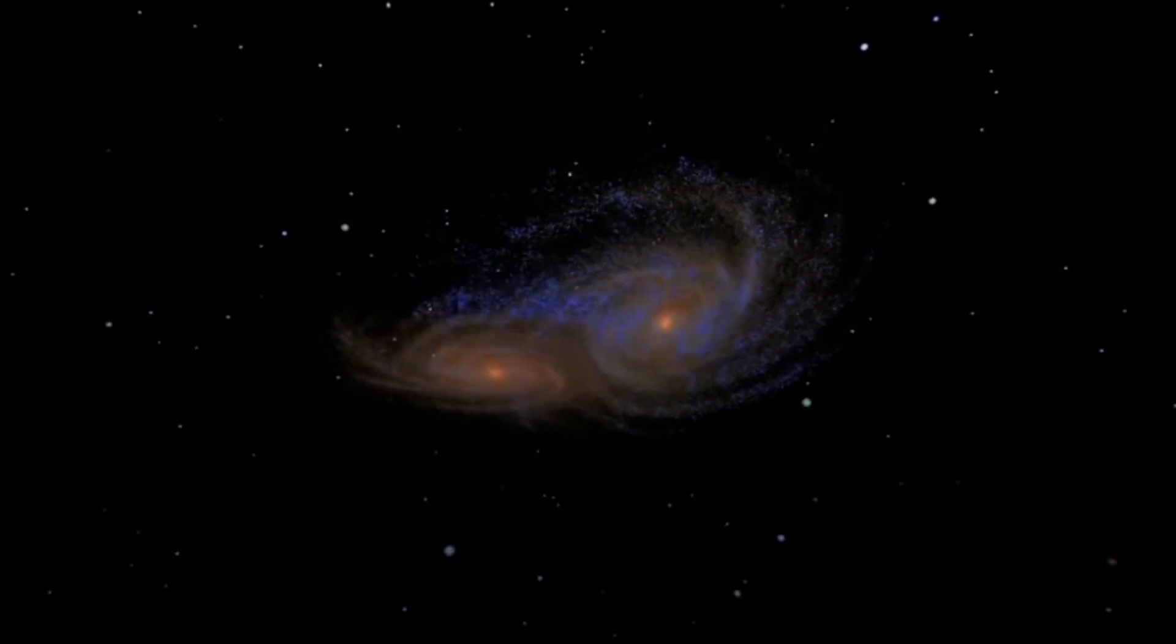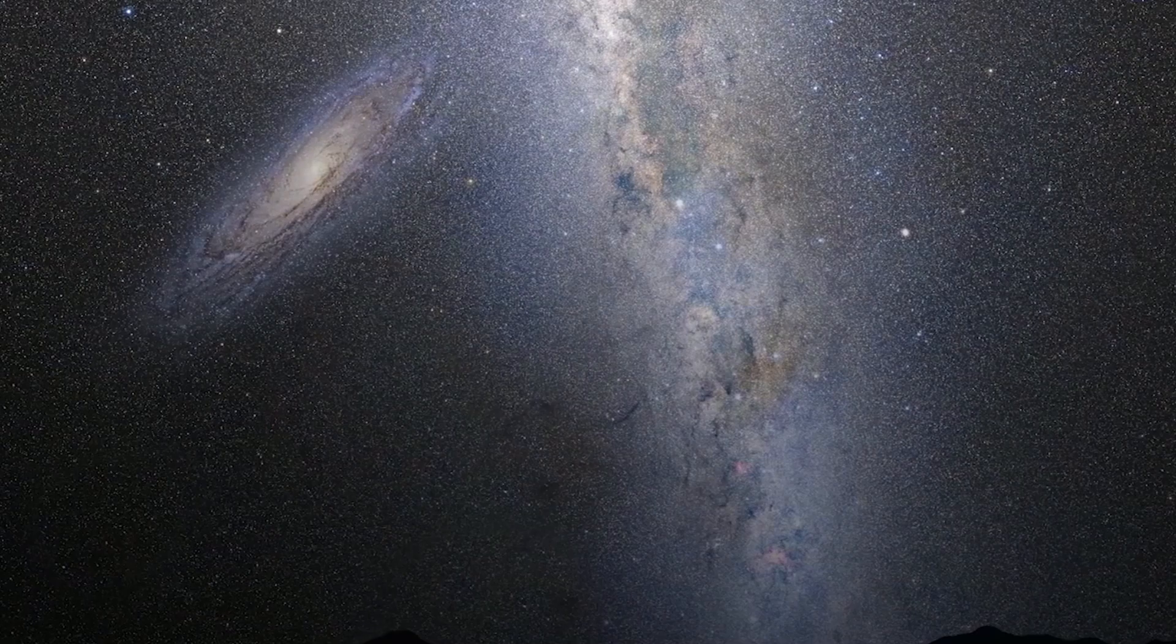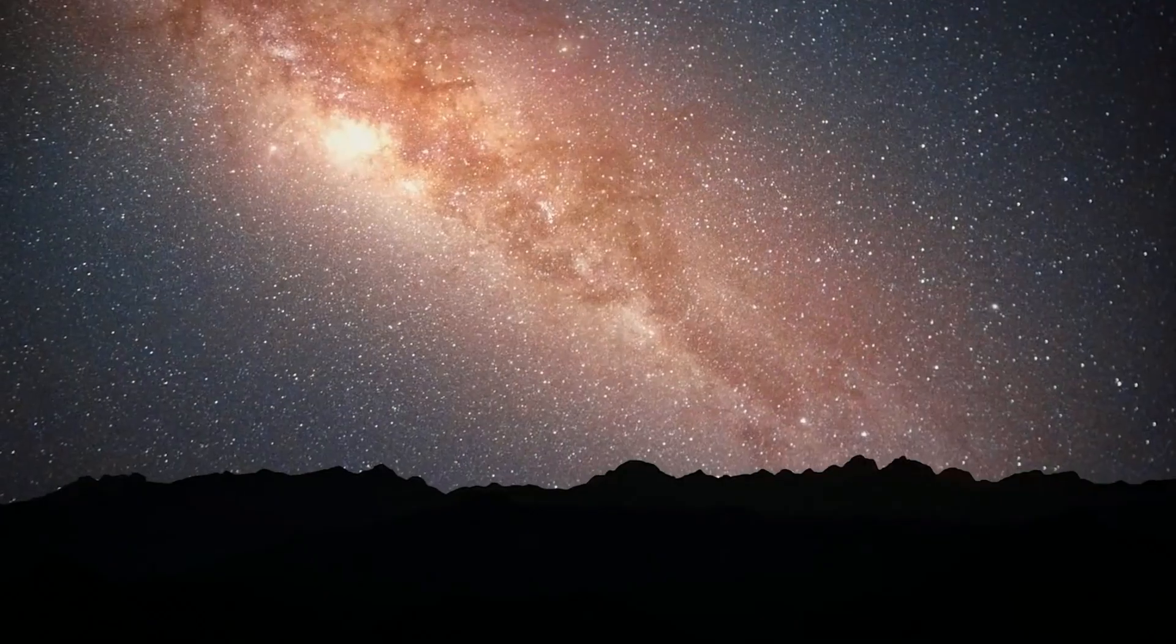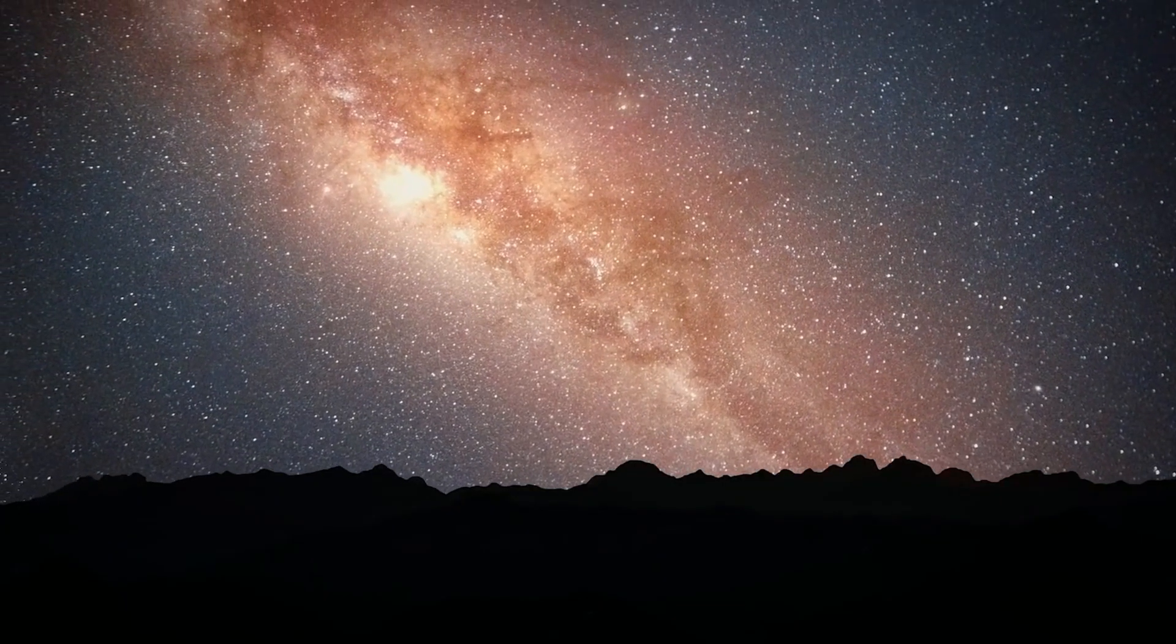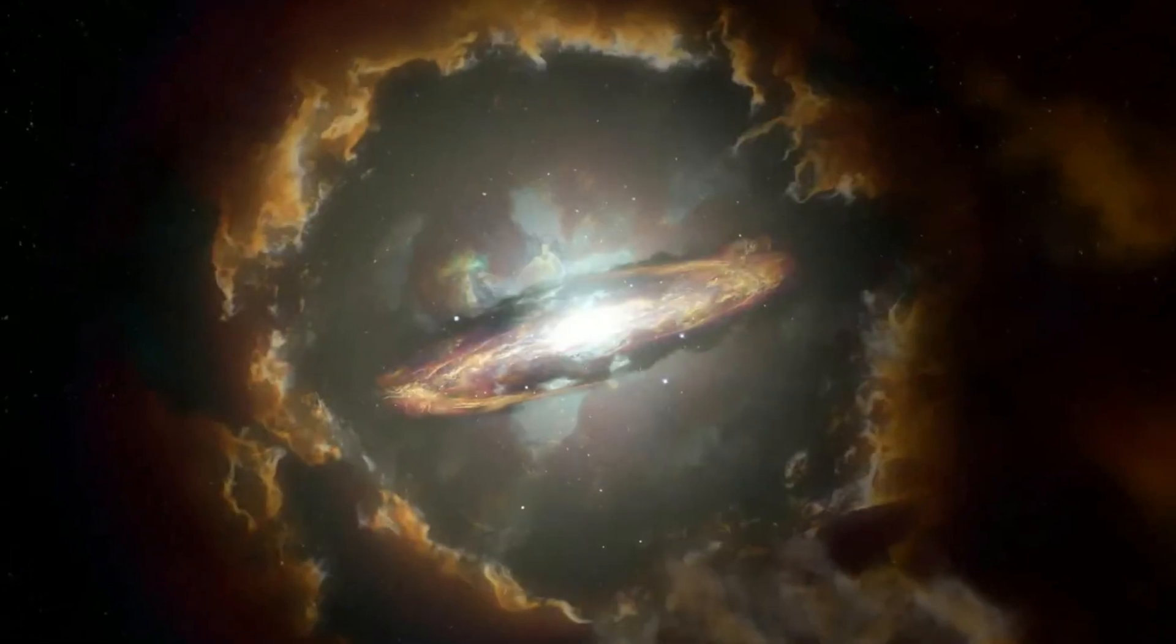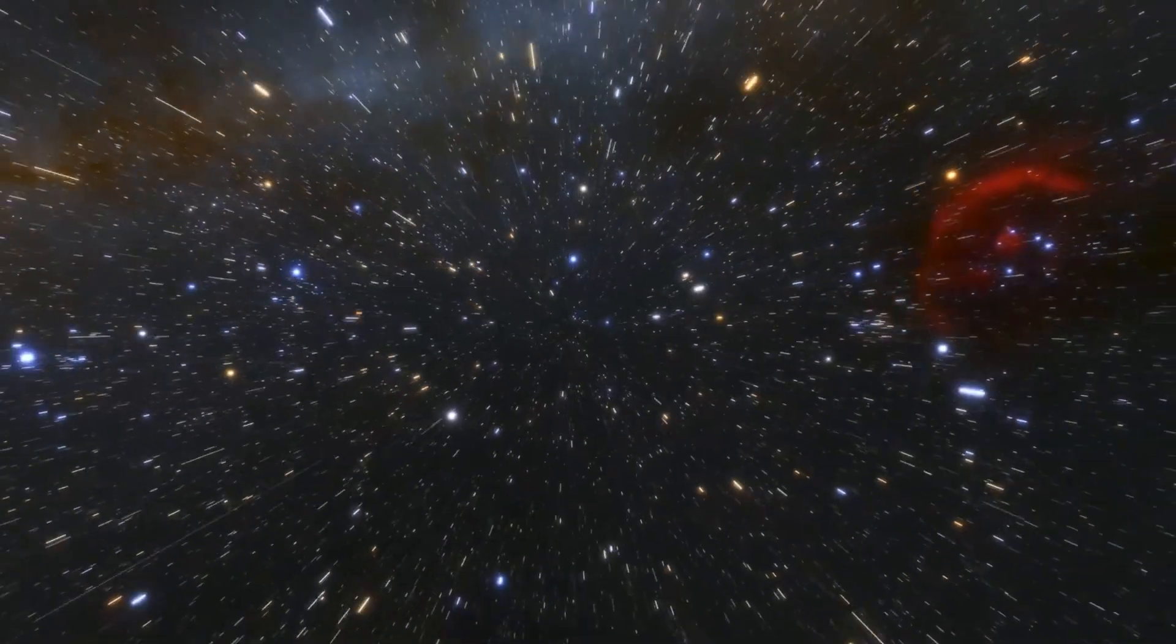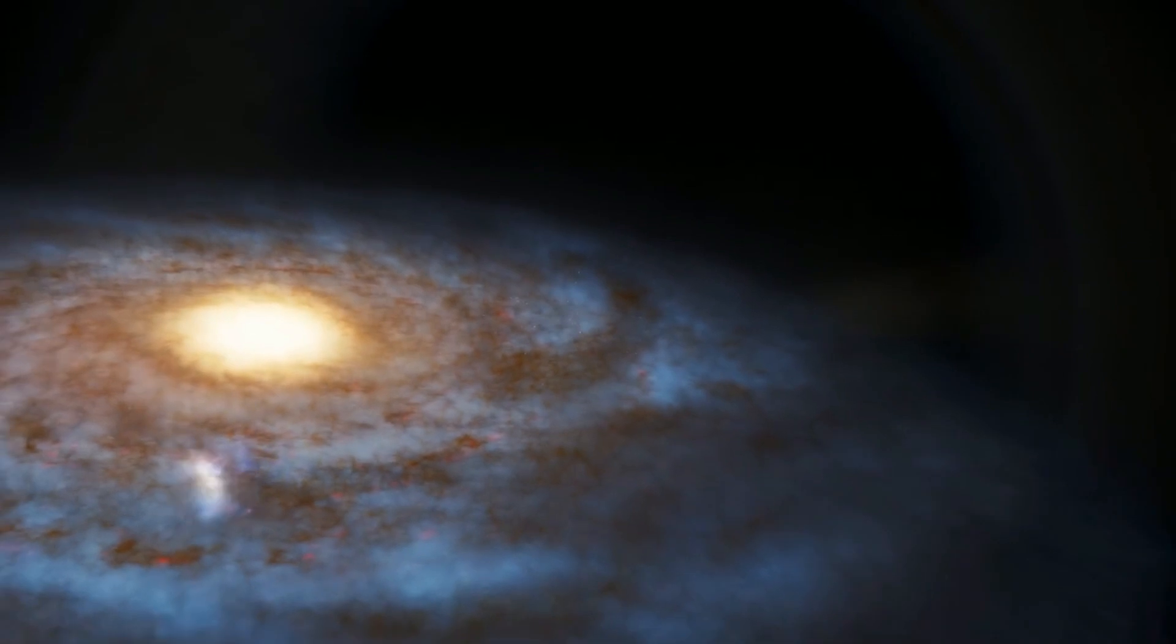As Sagittarius passes through the Milky Way, it's not just being pulled apart by the gravitational forces of its larger opponent. It's also leaving a trail of destruction in its wake. The dwarf galaxy is like a cosmic tornado, stirring up the galactic disk and triggering massive bursts of star formation while shaping the very fabric of our galaxy.